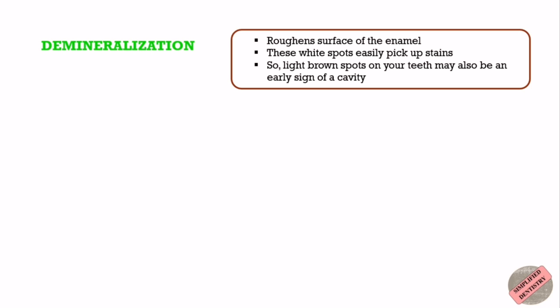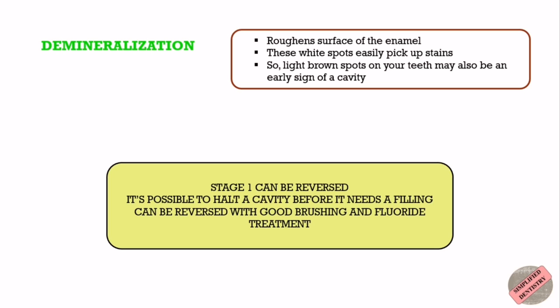Because of this, pay attention to light brown spots on your teeth as well. This color might also be an early sign of a cavity. At this early stage, demineralization is often reversible with good brushing and fluoride treatment. On the other hand, ignoring these chalky colored spots eventually leads to cavities.